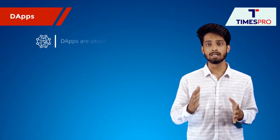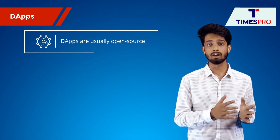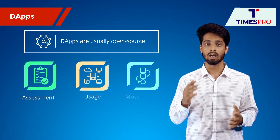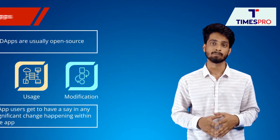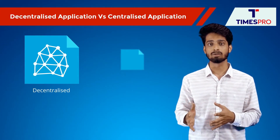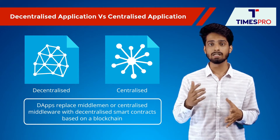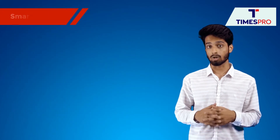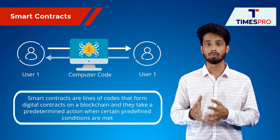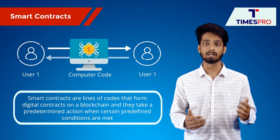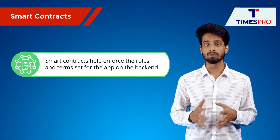Another important aspect of D-apps is that they are usually open-source, meaning that the source code of these apps is made publicly available to everyone for assessment, usage and modifications. Additionally, the D-app users get to have a say in any significant change happening within the app. These differences between a decentralized application and a centralized one stem from the fact that D-apps replace middlemen — a centralized middleware — with decentralized smart contracts based on a blockchain.